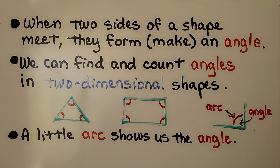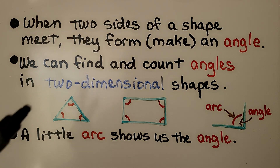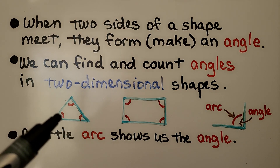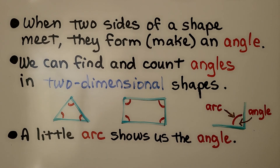When two sides of a shape meet, they form — that means they make — an angle. We can find and count angles in two-dimensional shapes. A little arc shows us the angle. Here we have a triangle, and we have one, two, three little arcs. That means we have three angles.